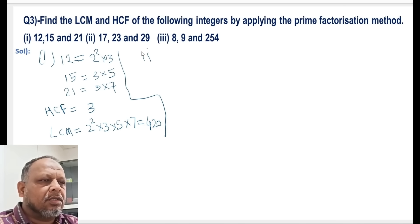Now moving on to the second bit, we've got the numbers 17, 23, and 29. We observe that these are all prime numbers, so there is nothing common between them. The HCF will be 1, no common factor.